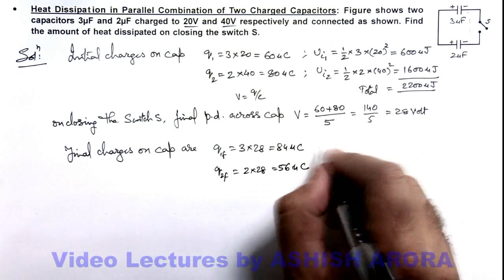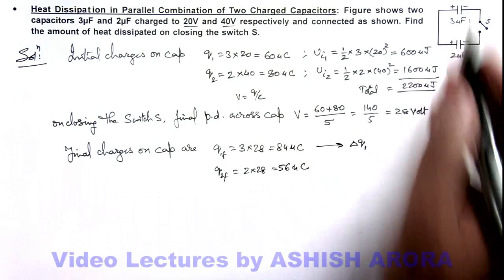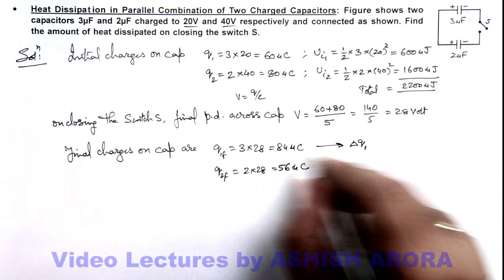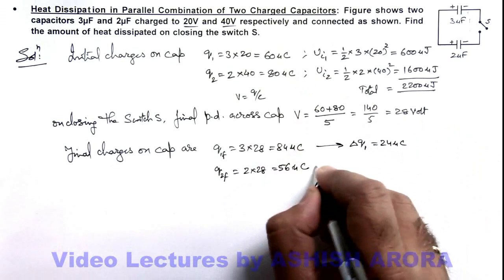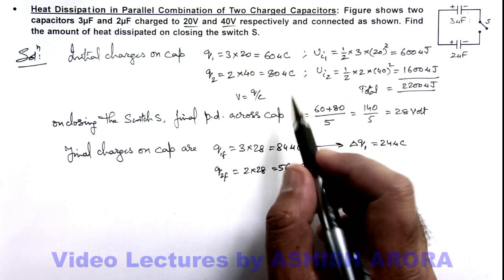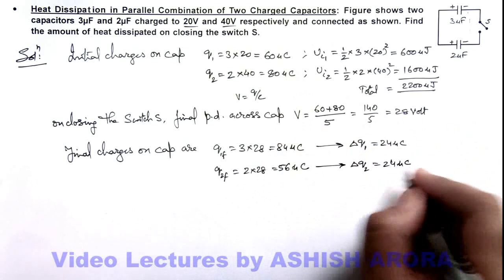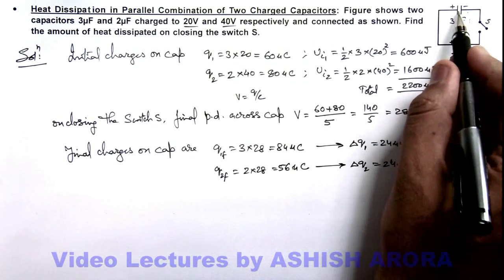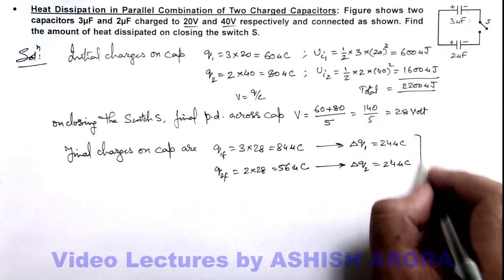For the first capacitor, the change in charge ΔQ on the first capacitor plate is 84 - 60 = 24 microcoulombs. For the second capacitor, ΔQ2 is 80 - 56 = 24 microcoulombs. This has to be the same because if charge is reducing from one, it is going only to the other one.